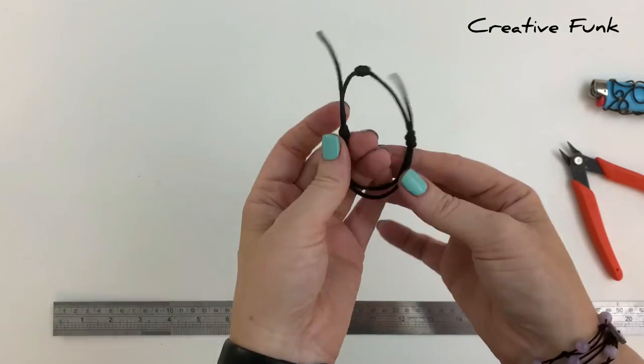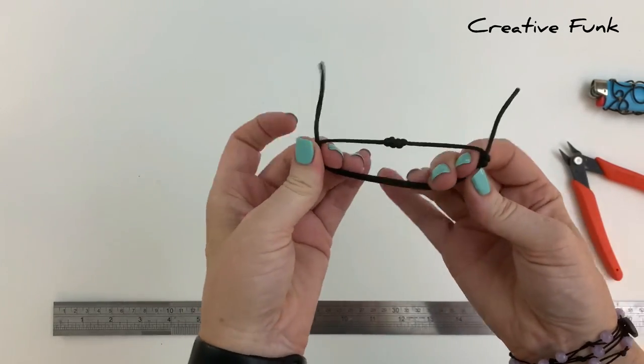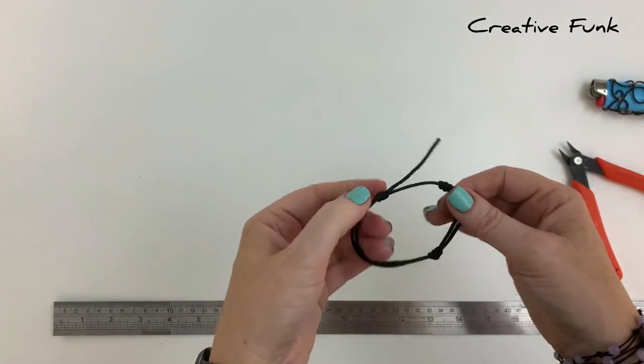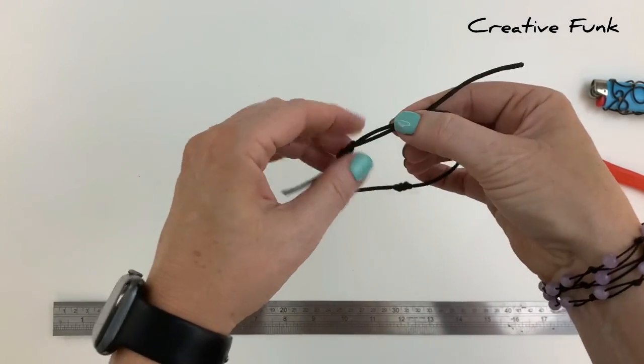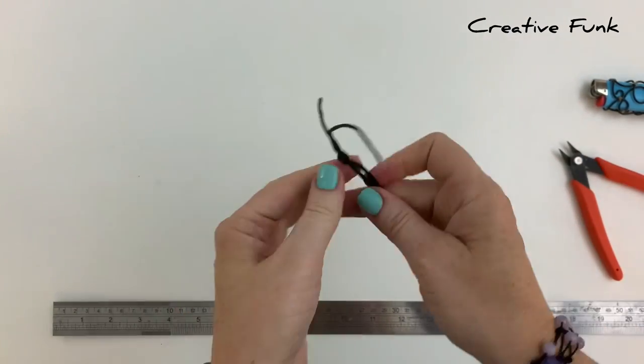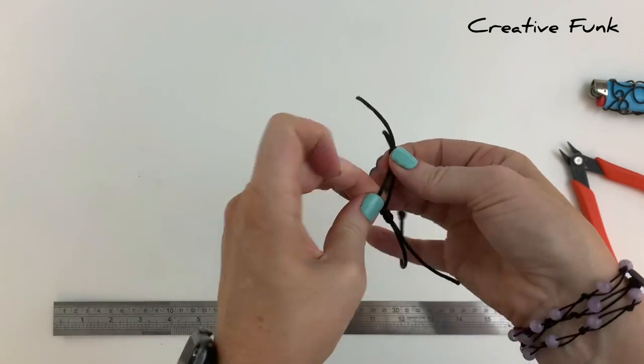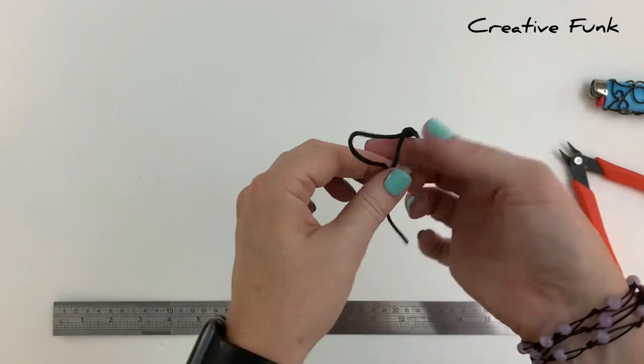You can retie your knots if you need, but if you're happy with them and they're in the right position, then just pull them nice and tight. Then you can check your sliding mechanism, make sure it's all sliding okay. And if you're happy with the positions of everything, then you can go ahead and cut the tails off.